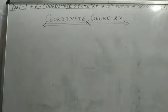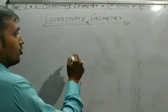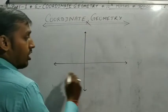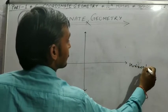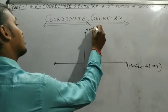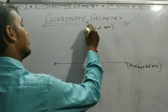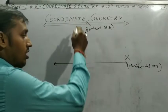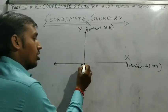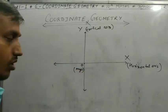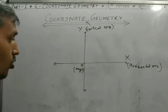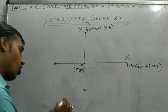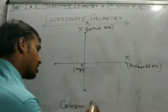We start coordinate geometry for class 9th mathematics. The horizontal axis is called the x-axis, and the vertical axis is called the y-axis. They meet at the midpoint O, called the origin. The x-axis and y-axis perpendicularly intersect at the origin, and this whole setup is called the Cartesian plane.